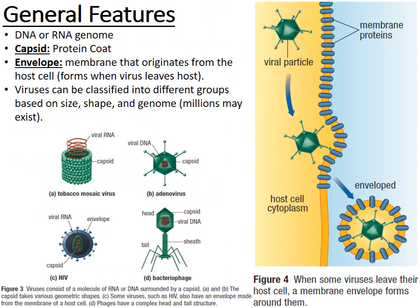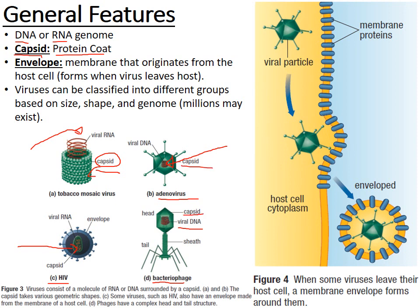Viruses do have a genome — it could be a DNA or an RNA genome. For example, the tobacco mosaic virus has viral RNA, the adenovirus has viral DNA, HIV has RNA, and the T4 bacteriophage has viral DNA. The protein coat has a special name: the capsid. Some viruses also have an envelope — an additional membrane surrounding them, typically derived from the host cell they infected. Upon leaving the host, the virus takes some of the host cell membrane with it, becoming an enveloped virus.